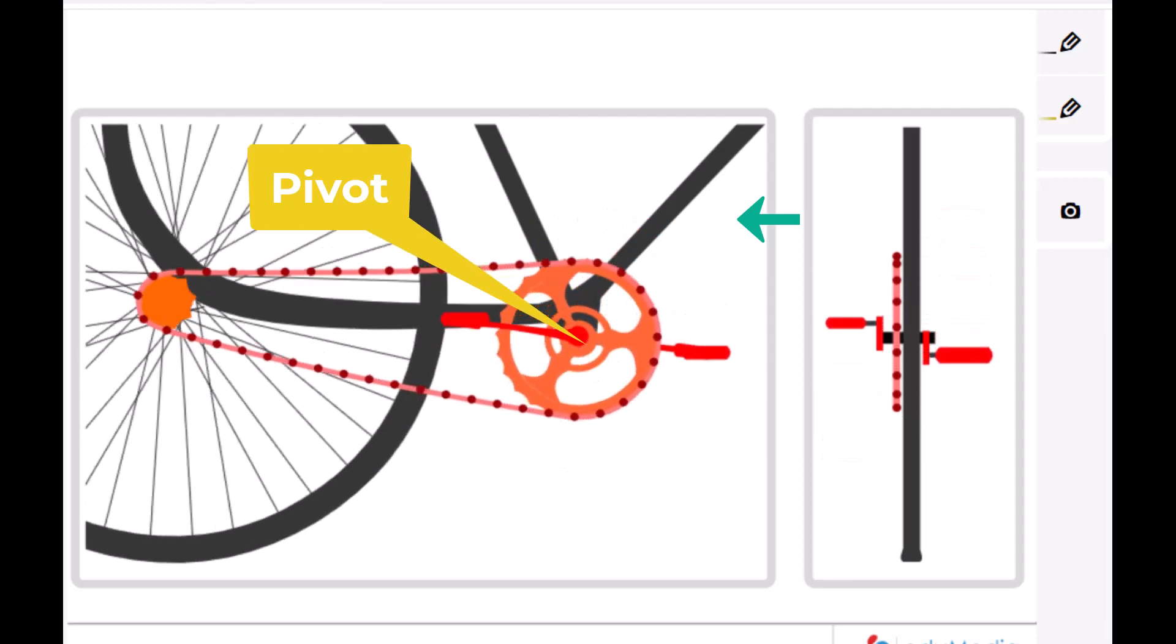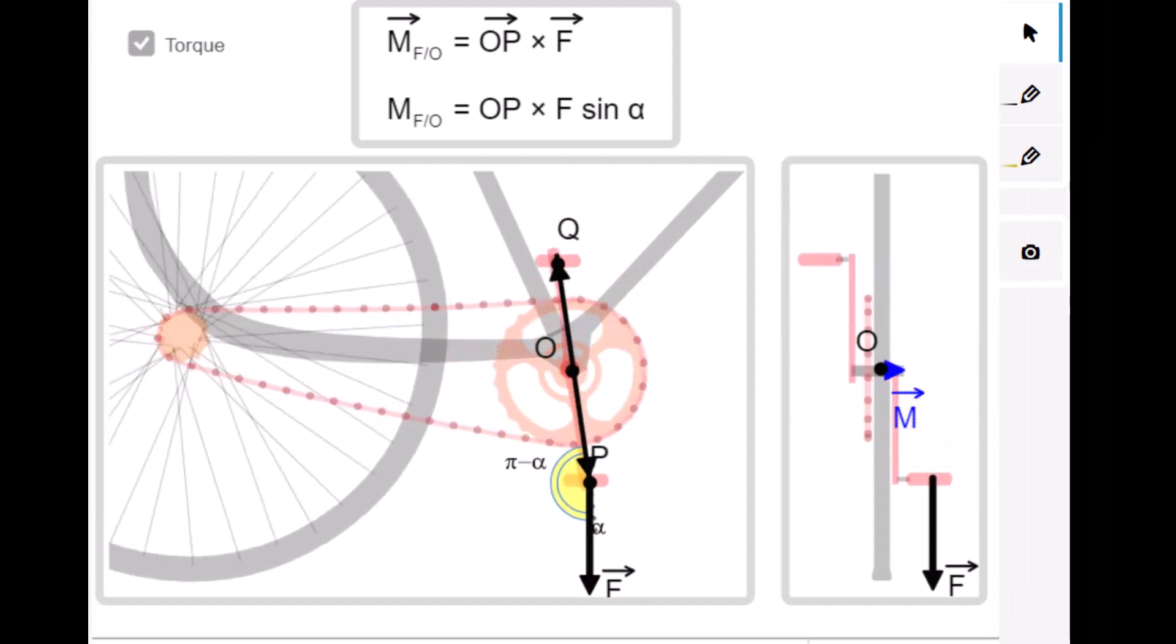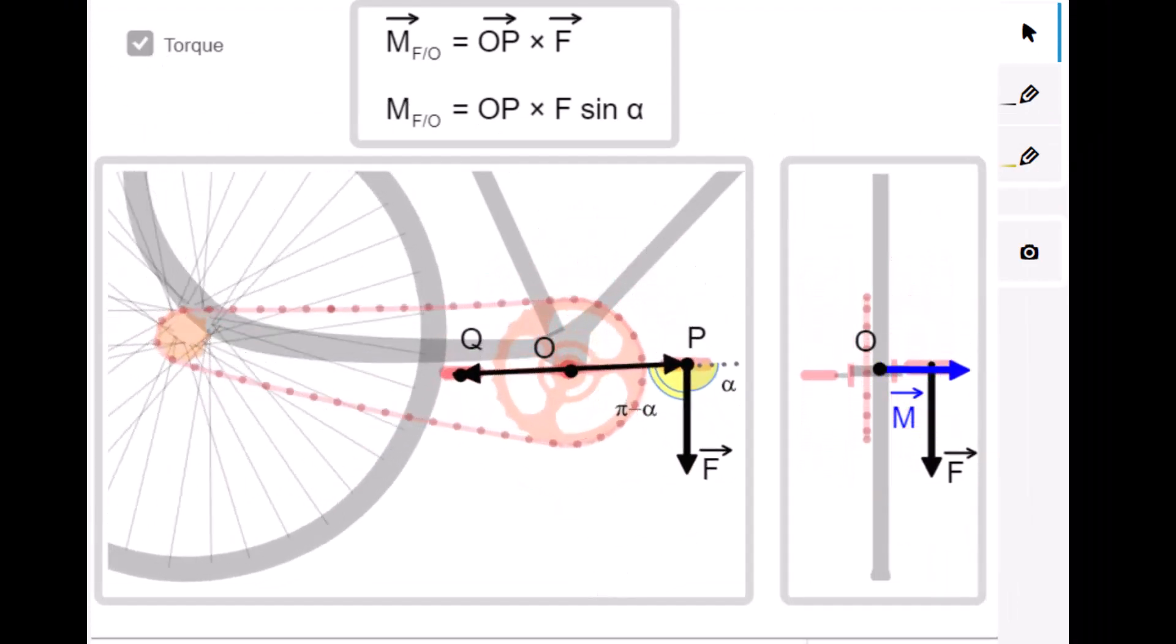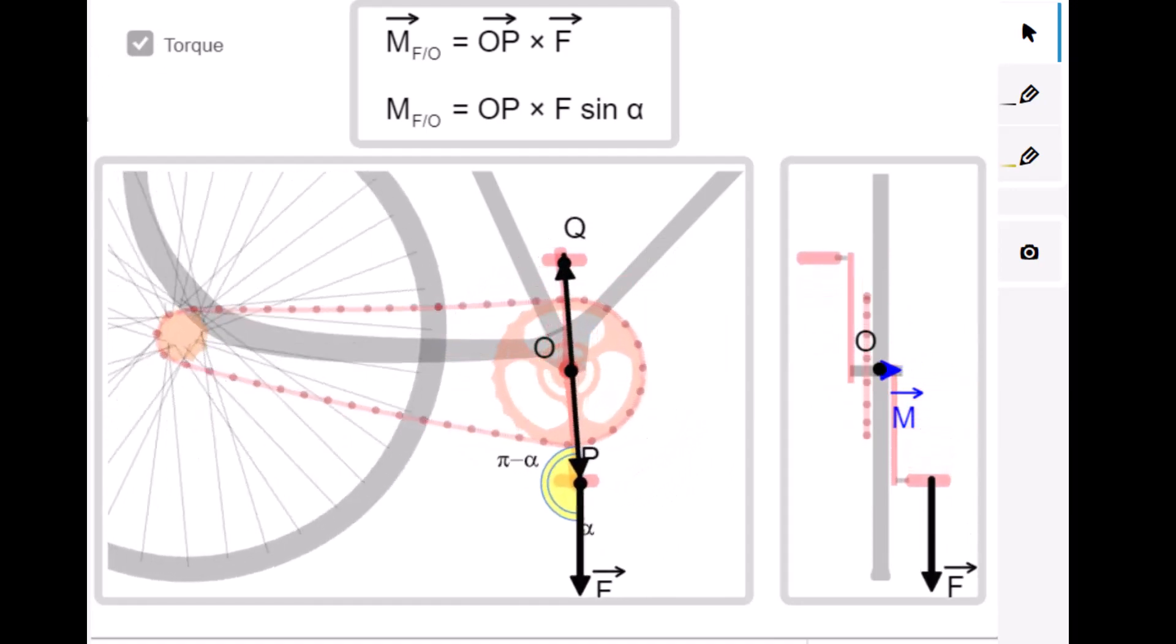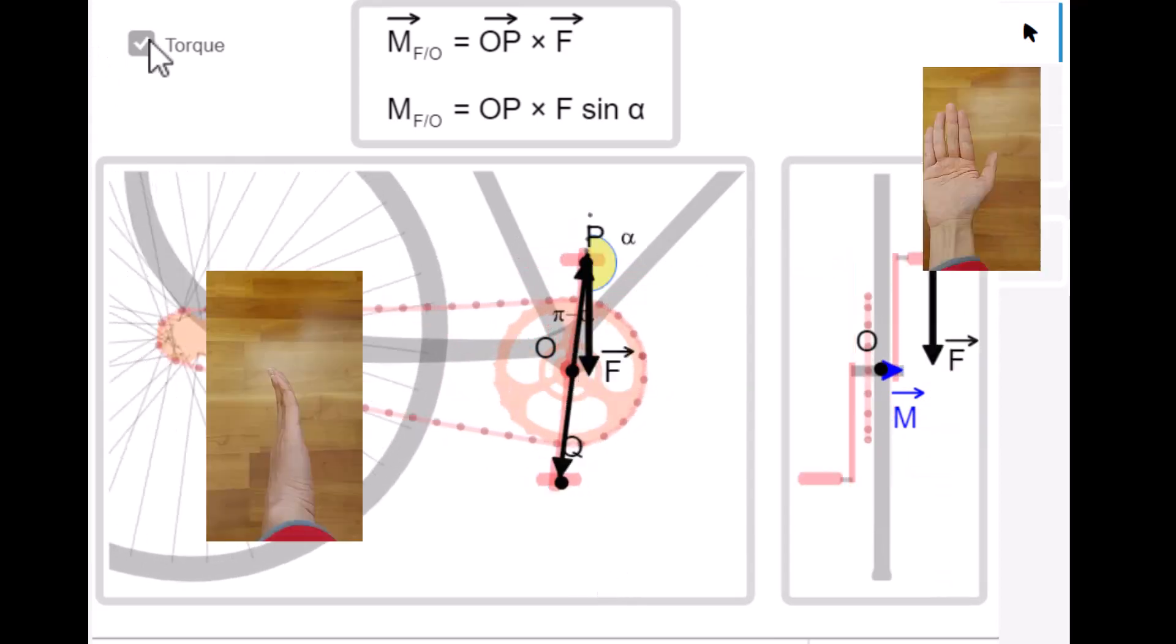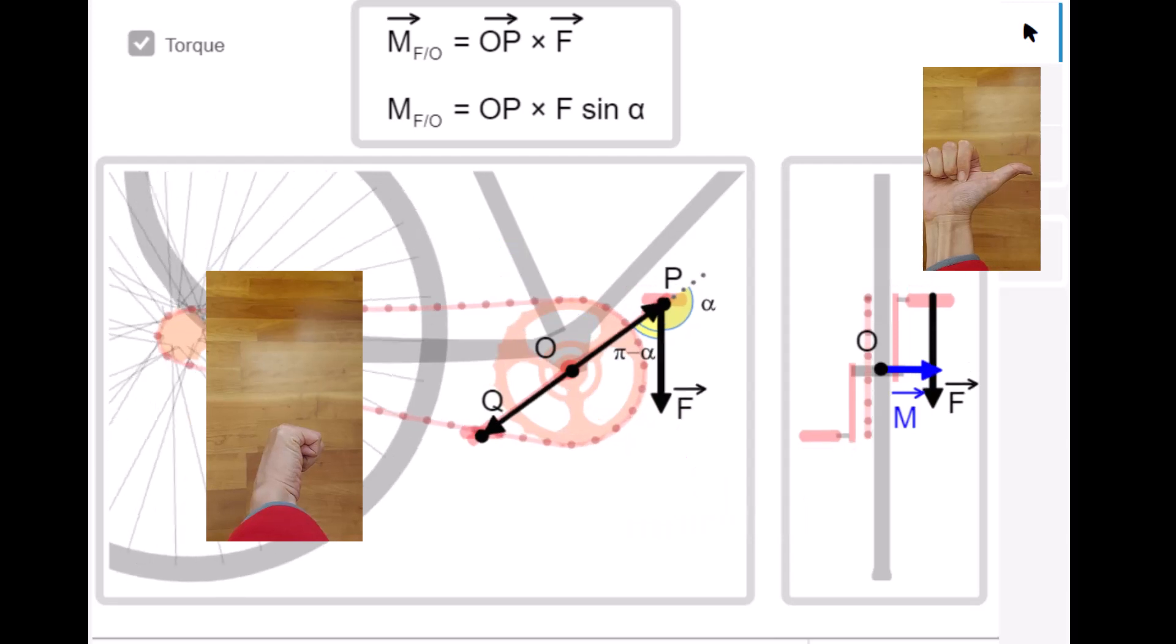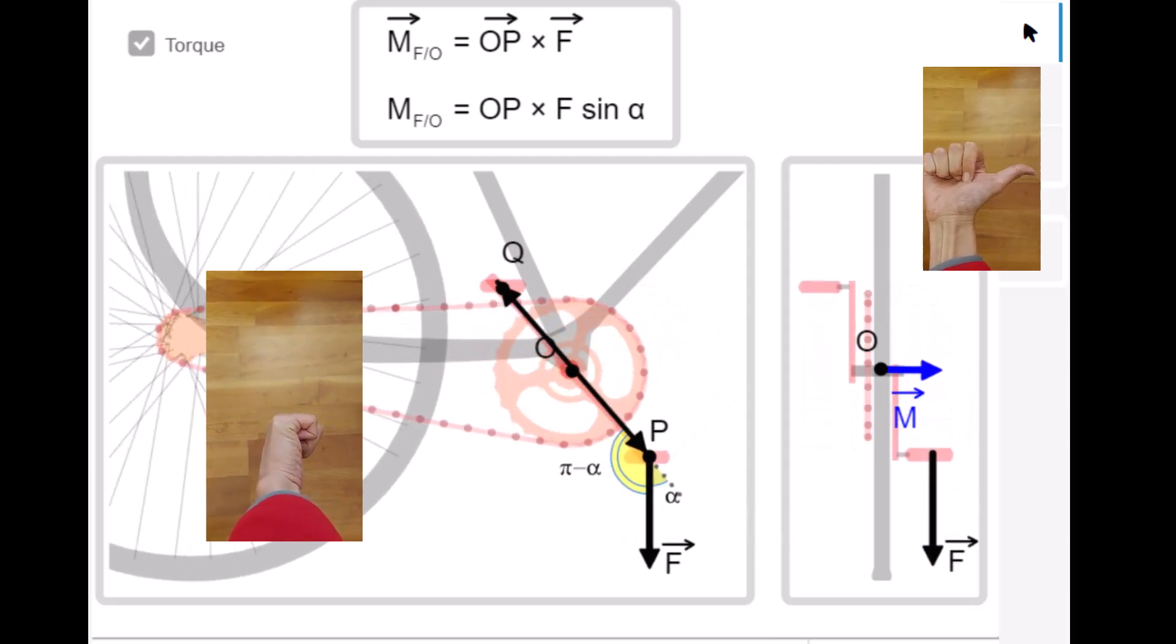The force on the pedal and the lever arm, which is labeled OP here, together define the plane of rotation, and we can use the right-hand rule to determine the direction of the change of the angular momentum by curling the four fingers from the lever arm vector to the force vector.